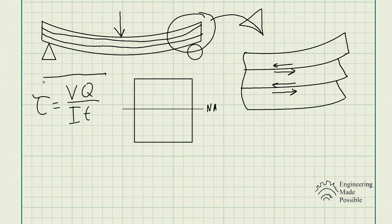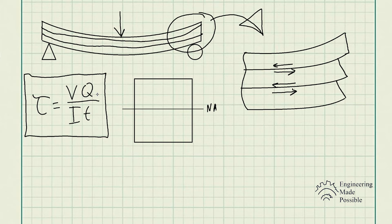Here is the formula we are going to be using — this is known as the shear formula. When it comes to solving for either the transverse shear stress or the longitudinal shear stress, they are actually equivalent, so you use the same formula for either. The shear stress is equal to the shear force times Q, divided by the second moment of area times the thickness of the cross-section.